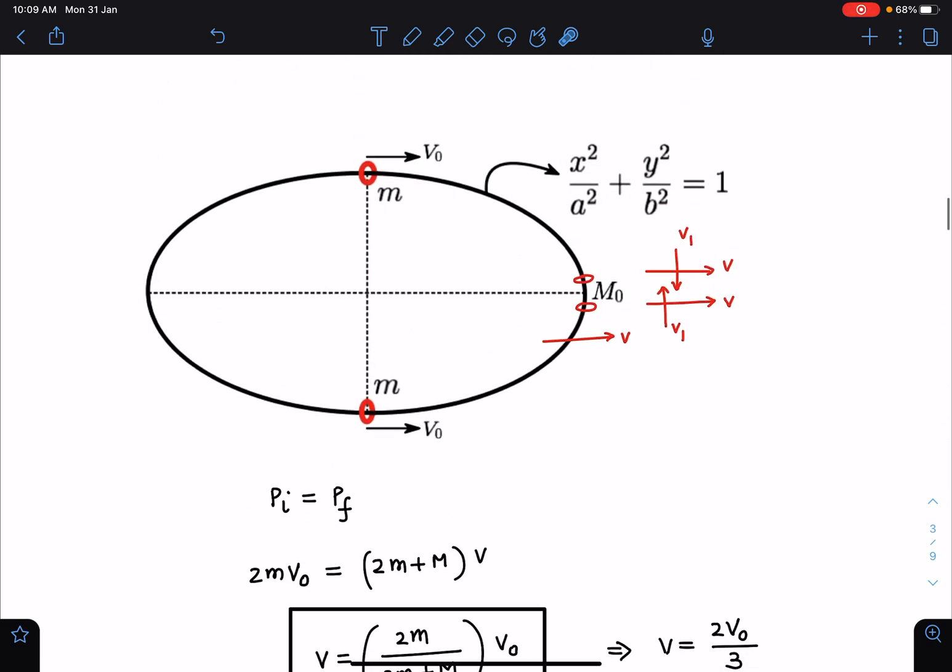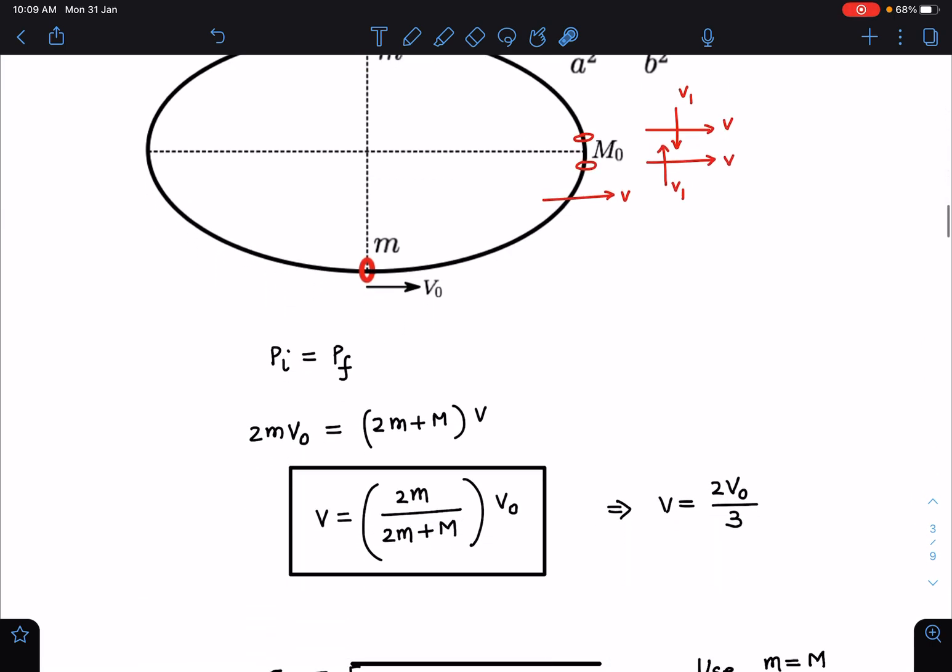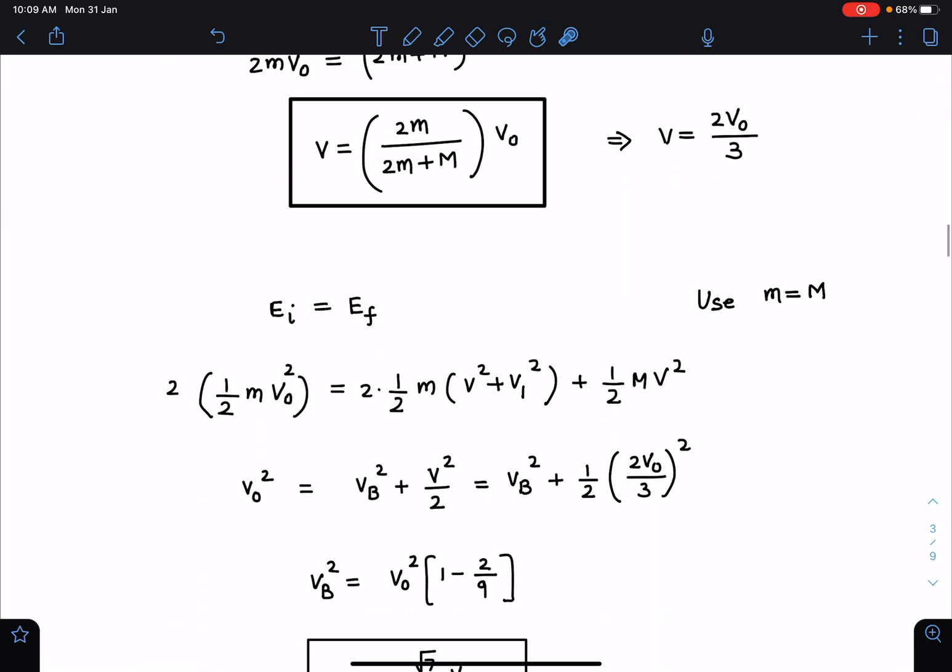The next part we can use energy conservation in order to find the bead's velocity. The speed of the bead is root of v square plus v1 square, and there are two such beads. So I can write in energy conservation that initially energy of one bead, there are two such, and similarly finally energy of bead I can write in this manner: half m total speed squared.